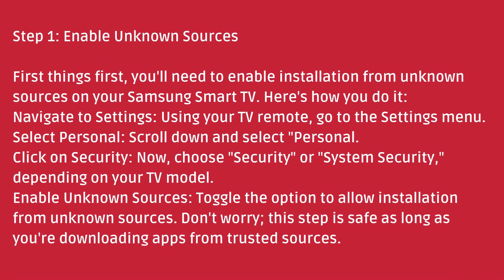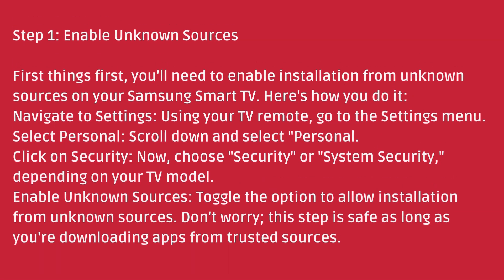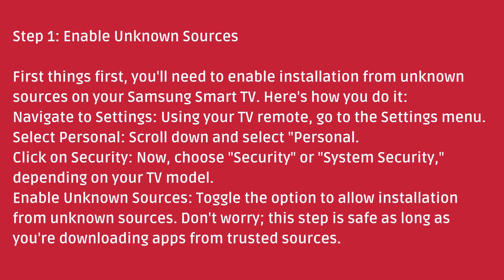Step 1: Enable Unknown Sources. First things first, you'll need to enable installation from unknown sources on your Samsung Smart TV. Using your TV remote, go to the Settings menu. Scroll down and select Personal. Now, choose Security or System Security, depending on your TV model. Toggle the option to allow installation from unknown sources. Don't worry, this step is safe as long as you're downloading apps from trusted sources.